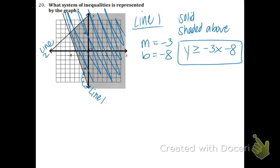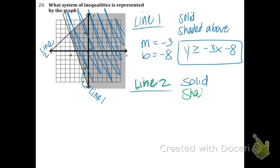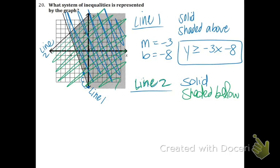Line 2 is also solid, but it is shaded below. The B is positive 8 and the M is 1. So our inequality is going to be y is less than or equal to 1x plus 8. And we are done with that one.